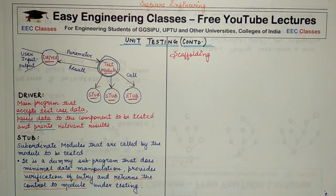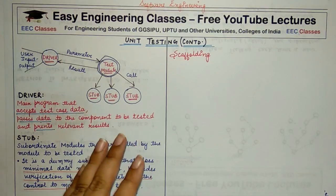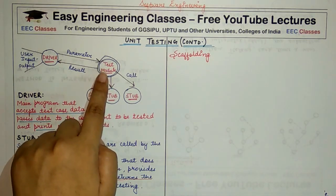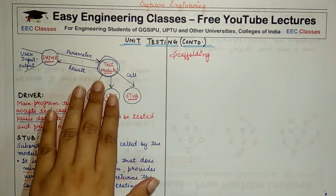First of all, we know what a driver is. If we are testing a module, then a module will generally be called first, unless it is the main module. A module will call our test module, and we will call other modules for certain components — for some functions to extract or achieve some functionality, or for intermediate calculations. We call the other modules and the result of the other module is returned to our test module wherever we are using our computation.